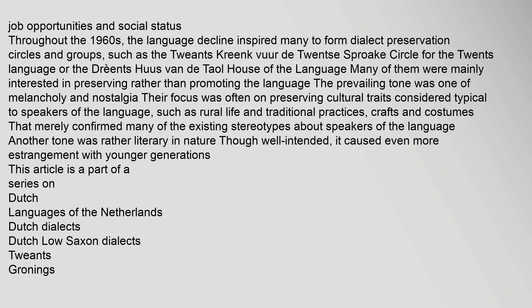Throughout the 1960s, the language decline inspired many to form dialect preservation circles and groups, such as the Twentse Kring for the Twentse language or the Dreens Huys van de Taol (House of the Language). Many of them were mainly interested in preserving rather than promoting the language. The prevailing tone was one of melancholy and nostalgia, with focus on preserving cultural traits such as rural life, traditional practices, crafts and costumes, which merely confirmed existing stereotypes. Another tone was rather literary in nature, though well intended, causing even more estrangement with younger generations.